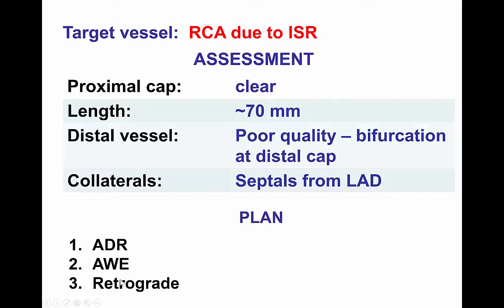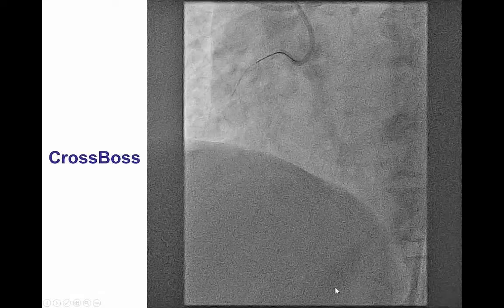The initial plan was to start with the CrossBoss catheter, which works pretty well for in-stent restenosis and CTOs, followed by wires, and if it failed, do retrograde crossing.